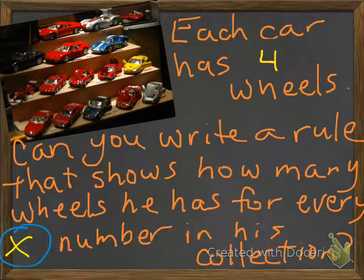For example, let's say either you or your friend have a bunch of model cars. You have a whole collection of them, and each car has four wheels. Can you write a rule that shows how many wheels you have or your friend has for every X number in the collection?